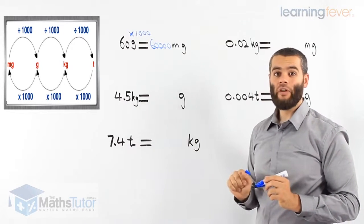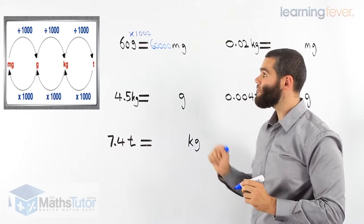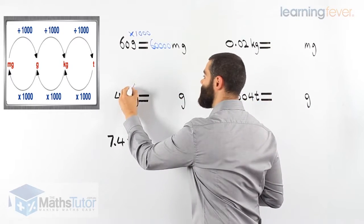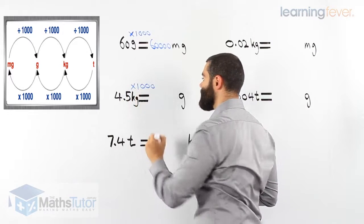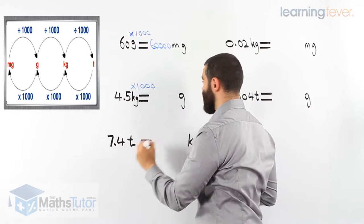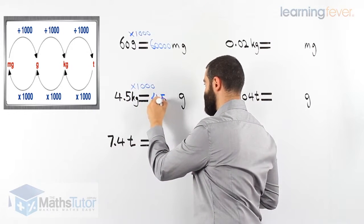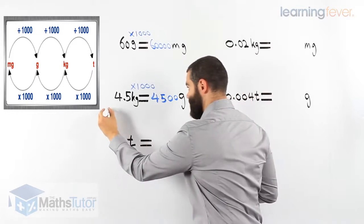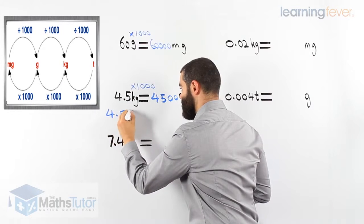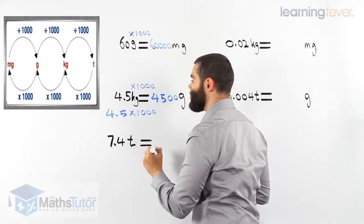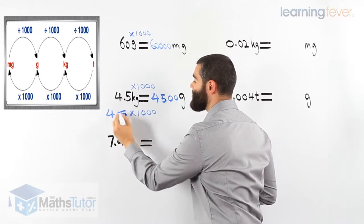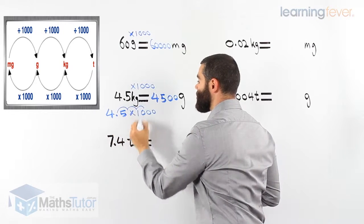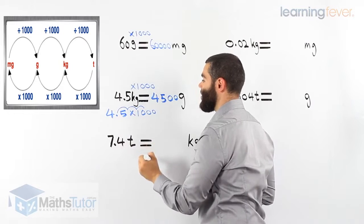Four point five kilograms to grams. Again, kilograms to grams, we multiply by a thousand. Four thousand and five hundred grams. You can use your calculator, or you can simply do it this way — times by a thousand, we move the point three places to the right: one, two, three. Four thousand and five hundred.